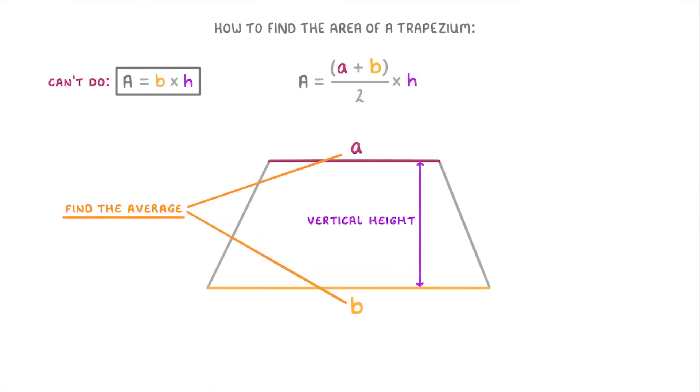So to find the average of the top and bottom we have to add them both together which is this a plus b part and then divide that by 2. So this whole (a + b) over 2 part is effectively just the average length of the trapezium. Then all we have to do is multiply that by the vertical height and we get the area.